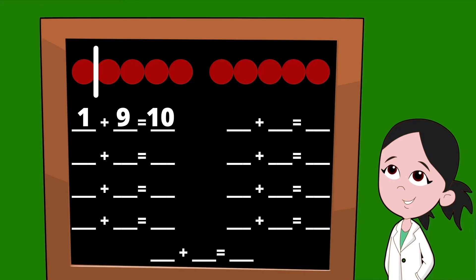Let's slide that line over to the right and find our next set of partners. To the left of our line, we have two dots, so our first partner is the number two. To the right of our line, we have eight dots, so our next partner is the number eight. Two plus eight equals 10.